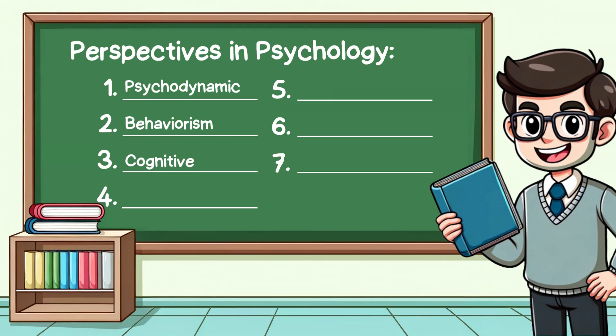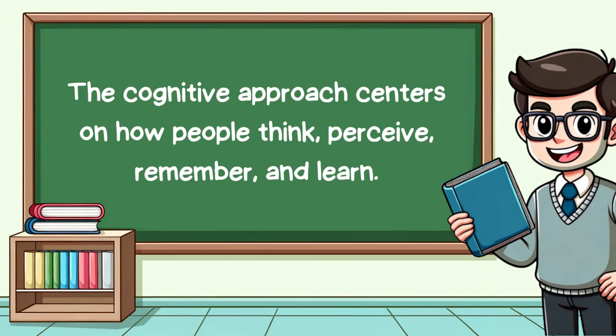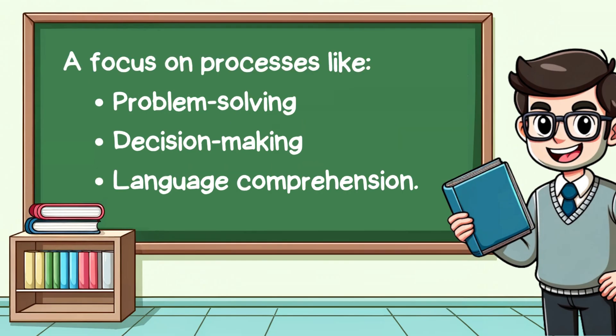The third perspective is the cognitive approach. This approach disagreed with behaviorism, believing that we can, in fact, explore unobservable thought processes. The cognitive approach centers on how people think, perceive, remember, and learn. Cognitive psychologists study processes like problem-solving, decision-making, and language comprehension.